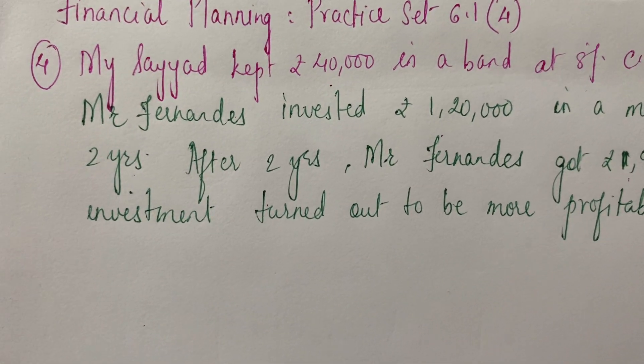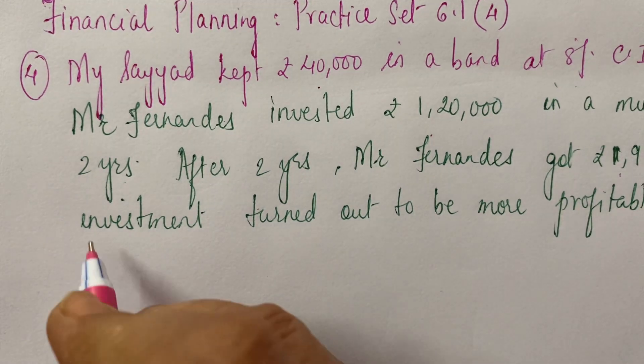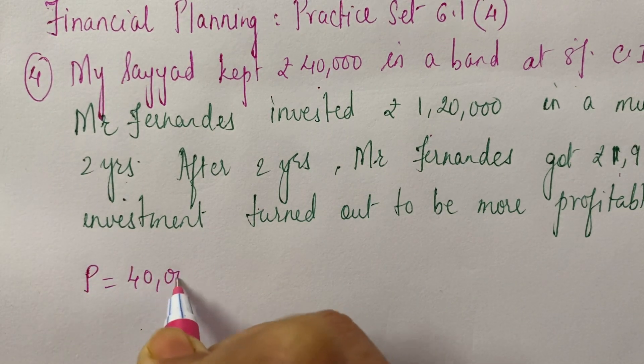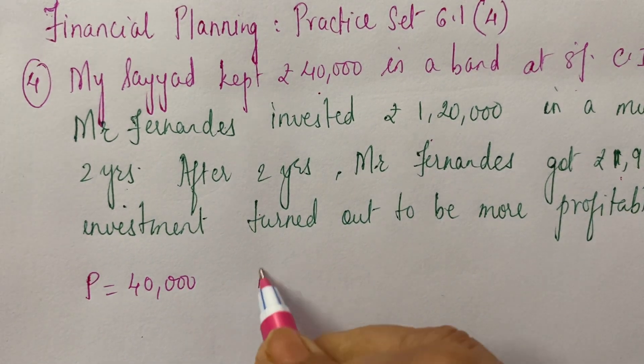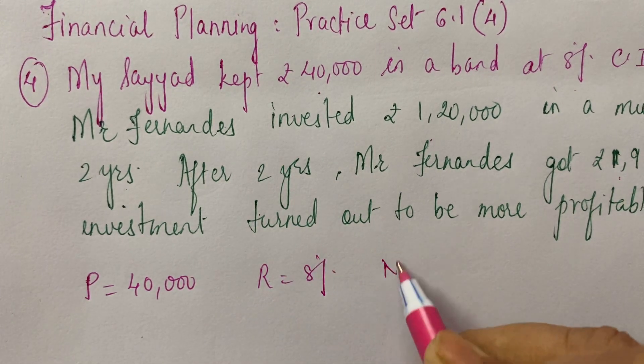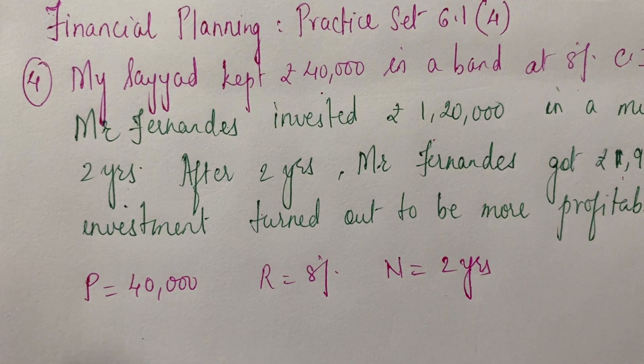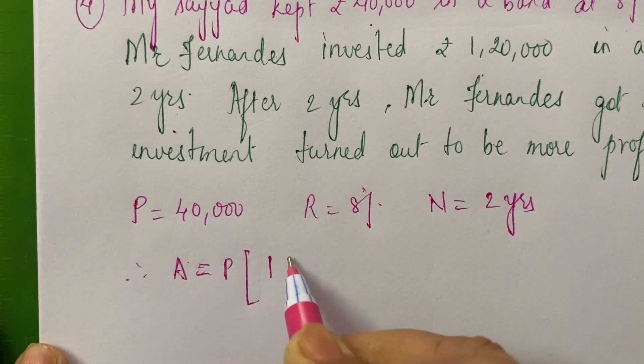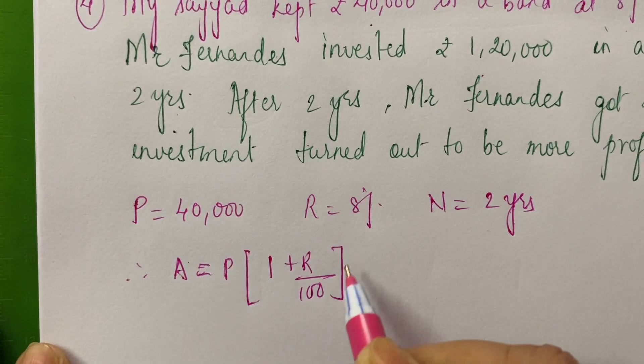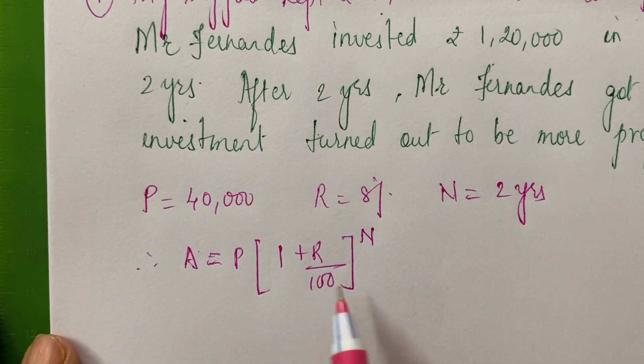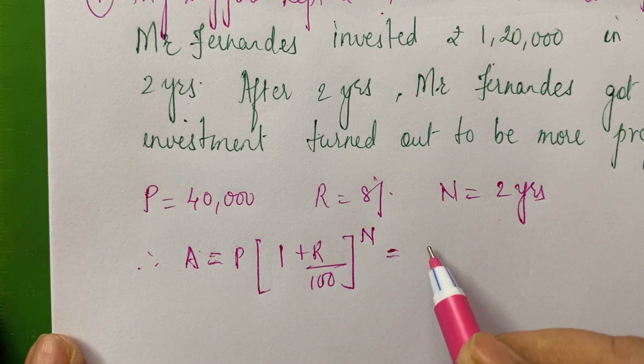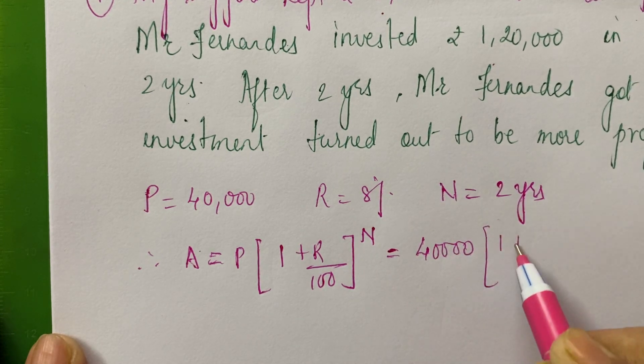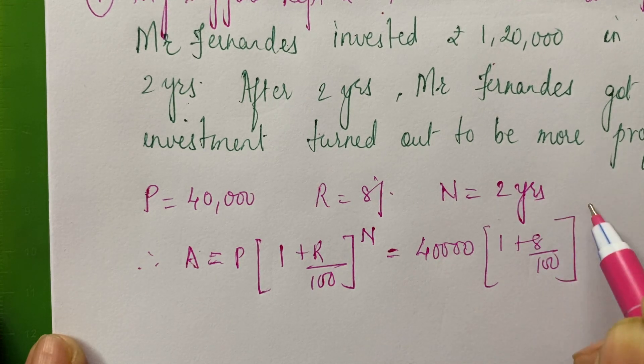So, let us find out the profit earned by Mr. Syed. Principal is equal to 40,000 in Mr. Syed's case. Rate of interest is 8%. Time period is two years. So, therefore, amount is equal to principal into 1 plus r upon 100 raised to the power n. So, that will give us, that is equal to 40,000, 1 plus 8 upon 100 raised to the power 2.